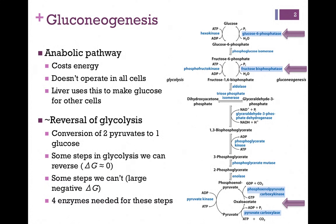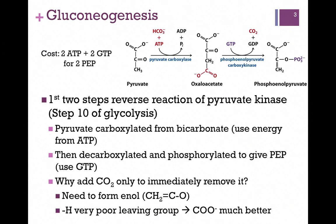Instead, for those three steps — indicated by the black arrows here — we're actually going to reverse those by using four steps, and we need four enzymes to catalyze those steps. In our first step of gluconeogenesis, we're going to reverse the reaction of pyruvate kinase.